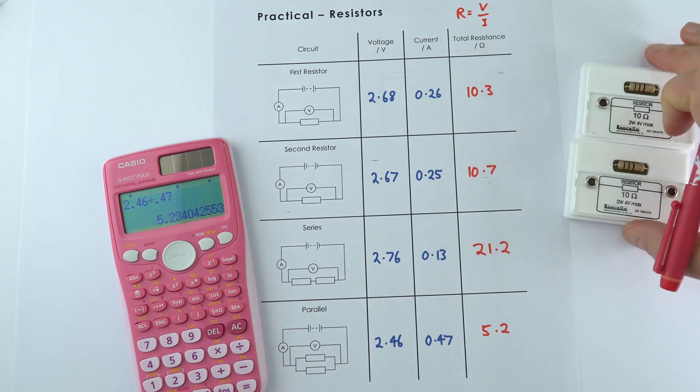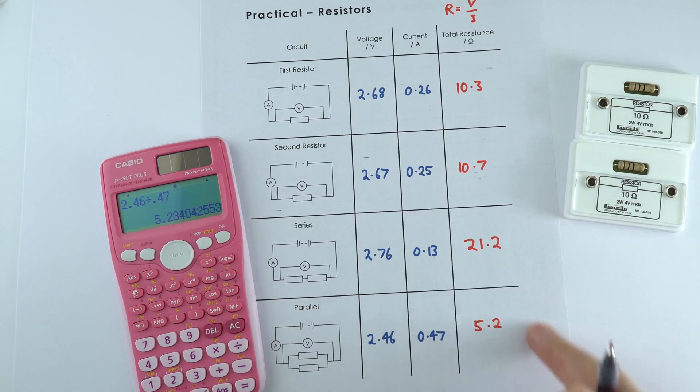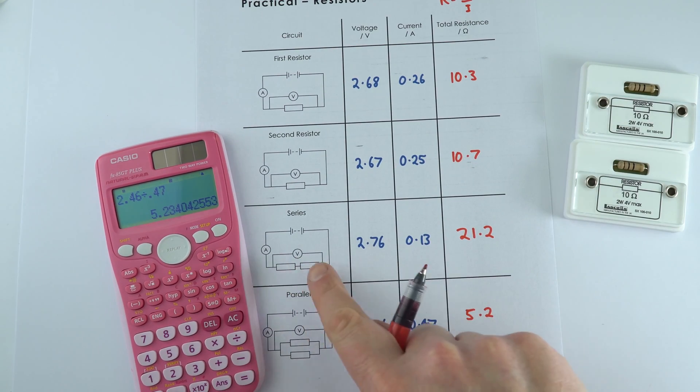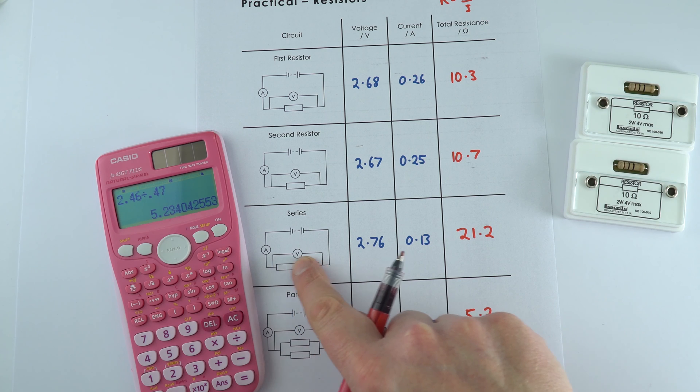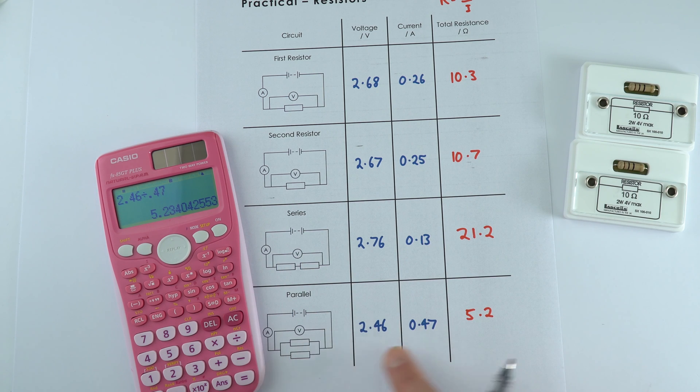So that's some data that we took and I've got my total resistances here, and we can see that as we add things in series their combined resistance increases, but when we add them in parallel their combined resistance decreases.